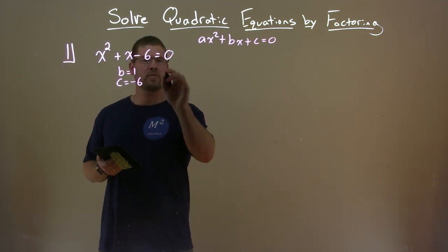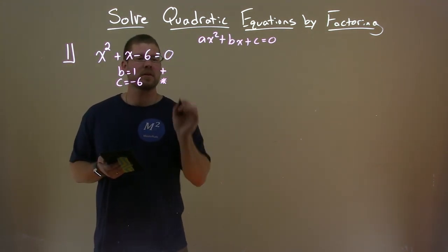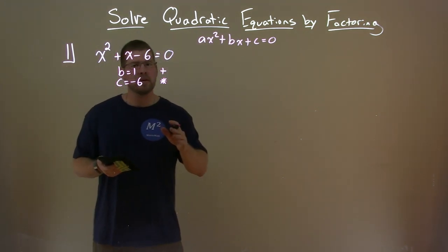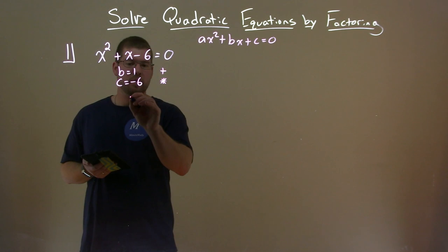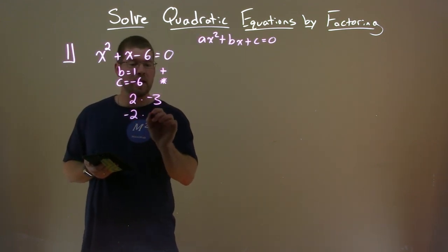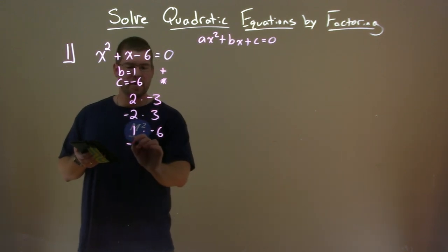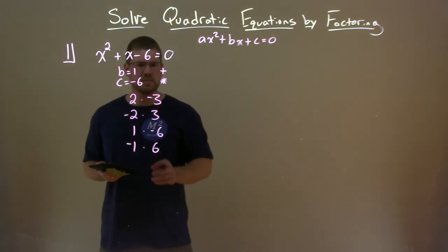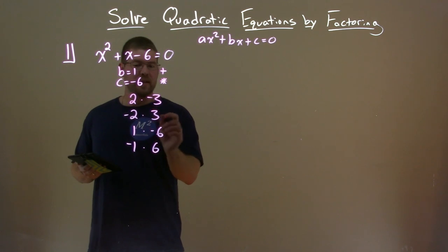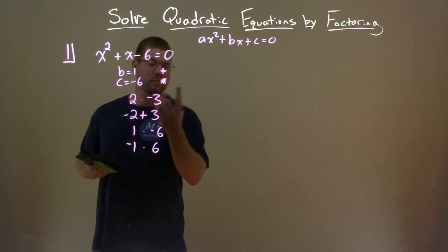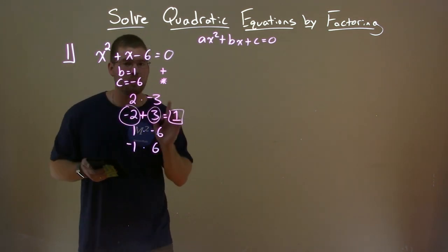We need to ask ourselves: what two numbers, when we add them together, equal one, but multiply to be negative six? Let's make a list of pairs that multiply to be negative six: two and negative three, negative two and positive three, one and negative six, and negative one and positive six. Out of these, negative two plus three is a positive one, so our two numbers are negative two and positive three.